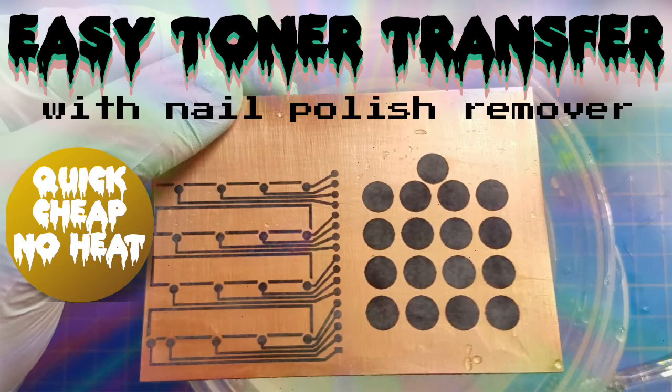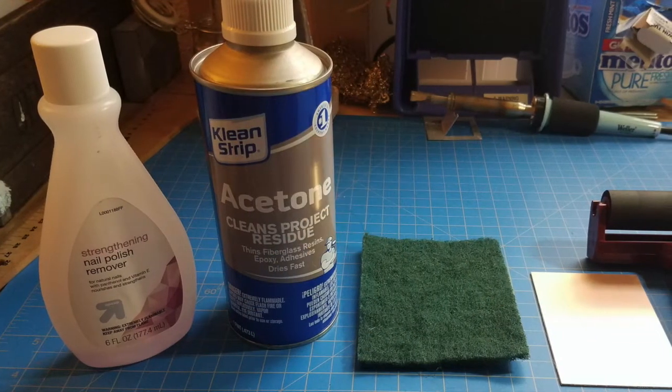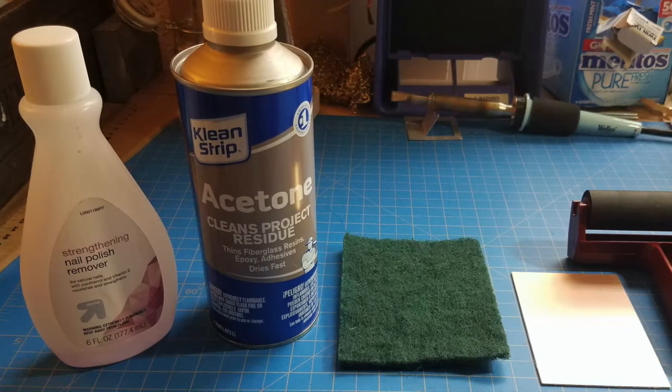All right, today I'm going to show you a quick and easy way to transfer a laser printout onto a blank copper-coated PCB board using just a few things. You're going to need nail polish remover, a little bit of acetone, a scotch bright pad or fine steel wool.